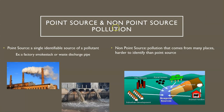Just some vocab before we get started. Point source and non-point source pollution — you'll hear them somewhat often and probably on the test. A point source is a single identifiable source of a pollutant, for example a factory smokestack or a waste discharge pipe. You can point at it and say that's where the pollution came from. Non-point source pollution comes from many places; it's harder to identify the one specific place the pollution came from — it could have come from cities, suburban development, agriculture, crops, deforestation, etc.